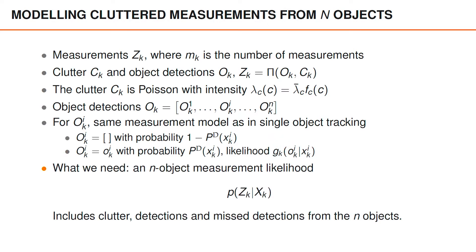So what we need, and what we're going to do in this section, is to see what the N object measurement likelihood P of Z given X is. And this likelihood includes the clutter, the detections, and the misdetections from all of the objects.